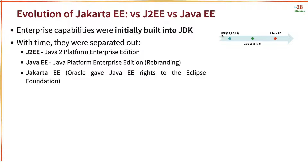So what we are talking about is the evolution of Jakarta EE. It started out as J2EE — the initial versions were 1.2, 1.3, and 1.4. Over time it became Java EE, with versions 5, 6, 7, and 8. And today we call it Jakarta EE, which also has a number of versions.